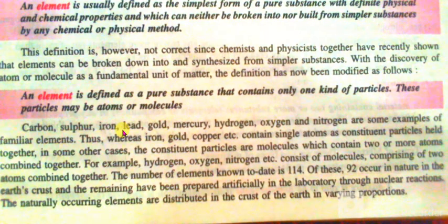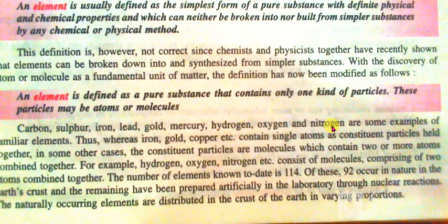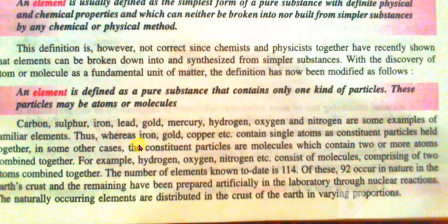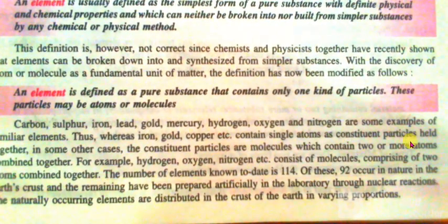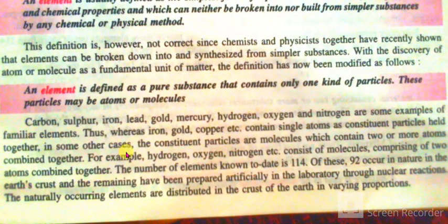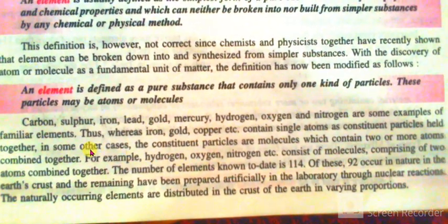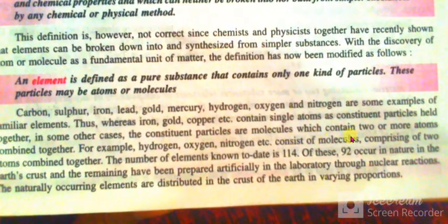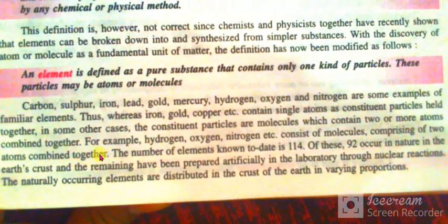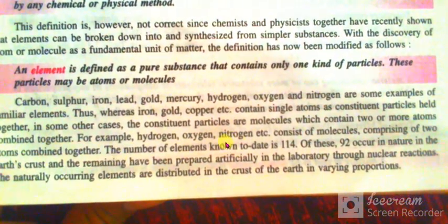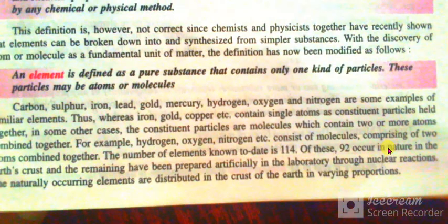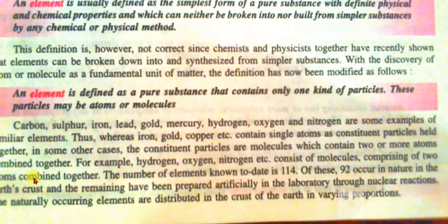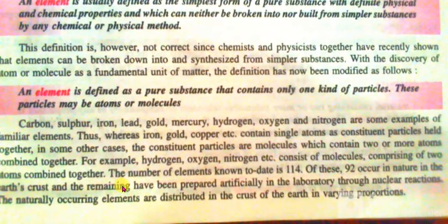Carbon, sulfur, iron, lead, gold, mercury, hydrogen, oxygen, and nitrogen are some examples of familiar elements. Iron, gold, and copper contain single atoms as constituent particles. In other cases, the constituent particles are molecules which contain two or more atoms combined together. For example, hydrogen, oxygen, and nitrogen consist of molecules comprising two atoms combined together.